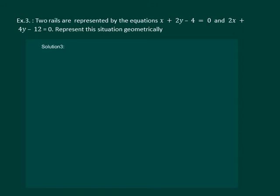Let us read the question. Two rails are represented by the equations x plus 2y minus 4 equal to 0 and 2x plus 4y minus 12 equal to 0. Represent this situation geometrically.